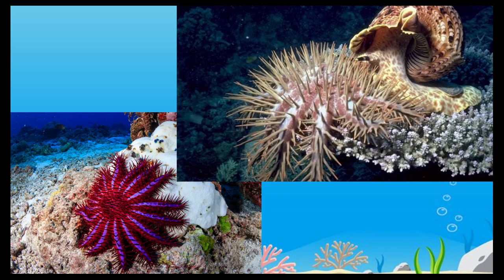Coral reef ecosystems, like any other, thrive while in balance. Part of the reef ecosystem includes starfish like the crown of thorns, which feed on coral. When this gets out of balance, over-predation occurs, which is currently the case in the Great Barrier Reef off Australia. However, predators are also prey for larger species — the giant triton snail, seen in the upper right corner, feeds on crown of thorns starfish and is being bred by a government-funded project in Australia as a control solution to this particular factor of reef stagnation and decline.